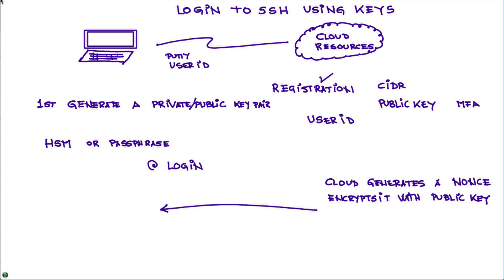The entity on the client side uses the private key — extracted from the HSM or via passphrase — to decrypt the NONCE. In an HSM, the private key is not accessible outside the module; you send what you want decrypted and get the result back. The idea is: prove to me that you have the private key that matches the public key you put on the registration. When the entity decrypts the message using the private key, it arrives at the very same NONCE the cloud generated, and sends that back.